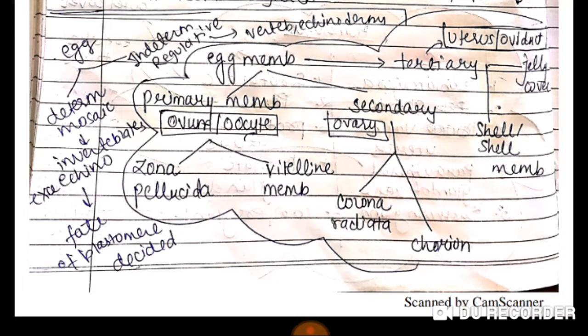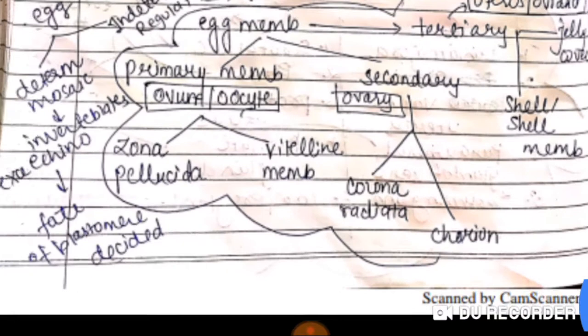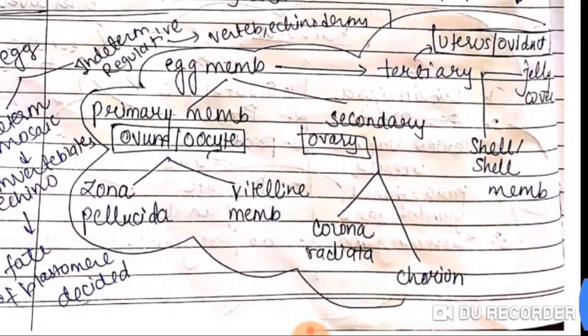Invertebrates except echinodermates have determinate or mosaic eggs. Now there are three types of egg membranes: primary membrane, secondary membrane and tertiary membrane. The primary membrane has two layers: zona pellucida and vitelline membrane, basically seen around the ovum or oocyte. The secondary membrane includes corona radiata and chorion, which are found in the ovary.